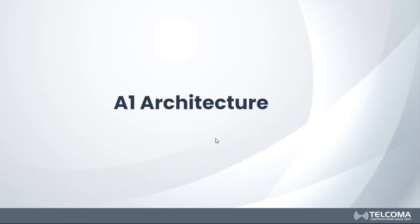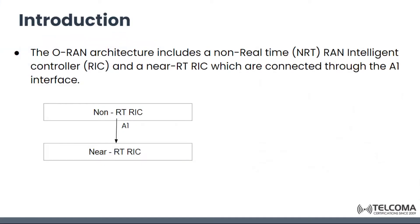Welcome to the topic of A1 architecture. The ORAN architecture includes a non-real-time RAN intelligent controller, which is NRT-RIC, and a near real-time RIC, which is connected with the help of the A1 interface. So basically, what is this A1? It is an interface between the non-RT RIC and the near RT RIC.